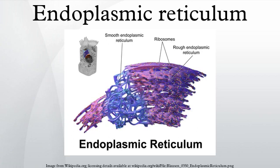There are three KDEL receptors in mammalian cells, and they have a very high degree of sequence identity. The functional differences between these receptors remain to be established.